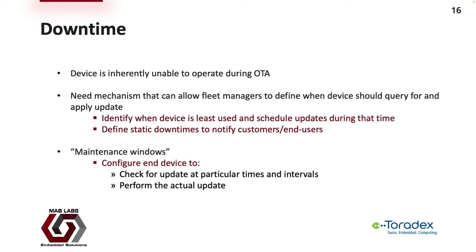Whenever an OTA operation is being performed, we have to be cognizant of any downtime that may manifest. In the case of OSTree, while retrieving objects locally won't affect normal device operation, switching the hard links may — for example, services may need to be gracefully shut down before hard links are transitioned. We need to characterize the times and intervals when a device will be inoperable during an OTA session. Fleet managers need mechanisms to define these intervals, identify when a device is least used, schedule updates at that time, and define maintenance windows — static downtimes to notify customers when the device may be inoperable.